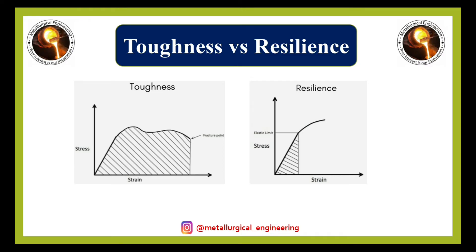Two very important terms in this tensile curve are toughness and resilience. These are basically the area under the curve of the tensile curve. When we record the area under the curve up to the fracture point, that area is known as toughness. When the material reaches up to the elastic limit or yield point, the area under the curve up to that point is known as resilience. So toughness is up to the fracture point and resilience is up to the elastic point.